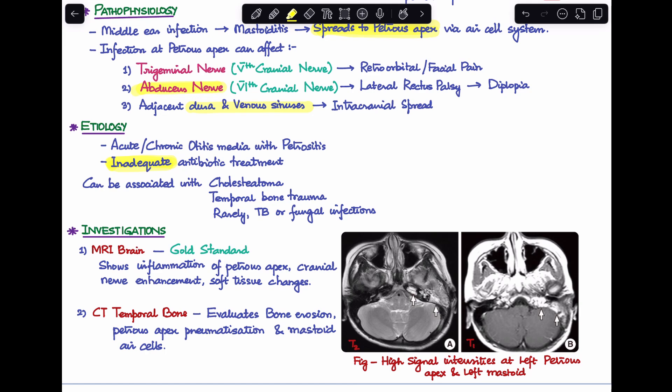What will be the investigations you perform to confirm your diagnosis? The gold standard is taking an MRI of the brain. If you see in the image over here, the left one is a T2 weighted MRI and the right one is a T1 weighted MRI. In the MRI brain we see inflammation of the petrous apex, cranial nerve enhancement, and soft tissue changes. If you see in the arrows that are pointed, the first one is the petrous apex and the second one is pointing towards the mastoid. You can see some high signal intensities in the left petrous apex and the left mastoid.